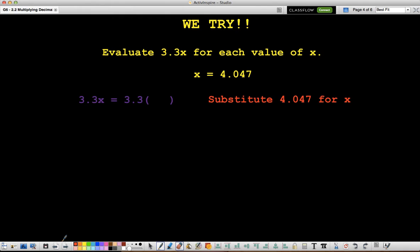So we're also going to talk a little bit about expressions here. When we're working with expressions, you can evaluate expressions by substituting. So what you're going to do is you're going to substitute for x. So in this case, they tell us that x is equal to 4 and 47 thousandths. So wherever I see x, I'm going to replace it with the 4 and 47 thousandths.